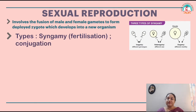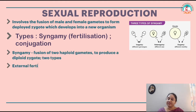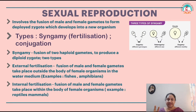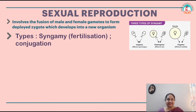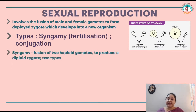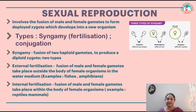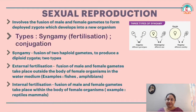Syngamy is the fusion of two haploid gametes to produce a diploid zygote. Syngamy is of two types: external fertilization and internal fertilization. External fertilization is where the fusion of male and female gametes takes place outside the body of the female organism in the water medium. Examples are fish and amphibians.